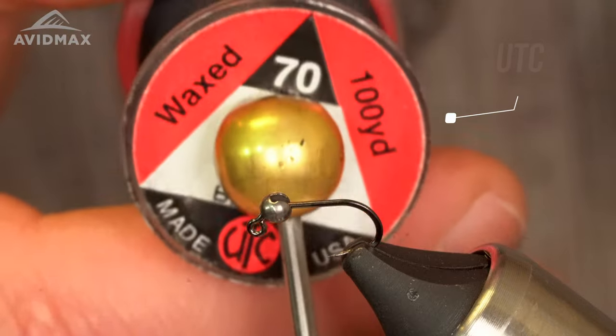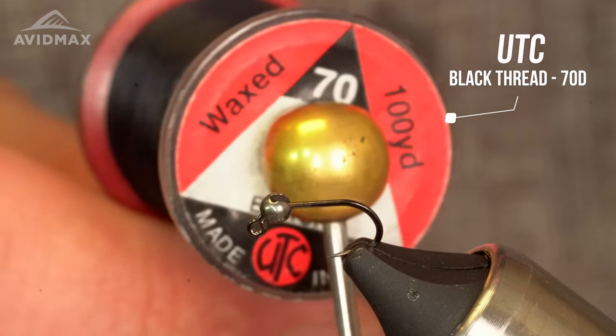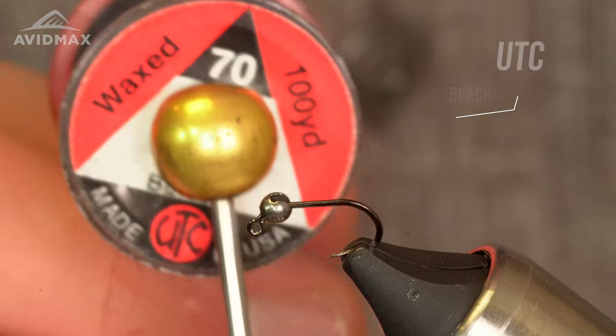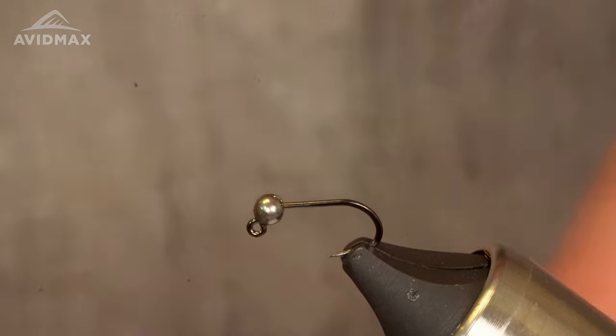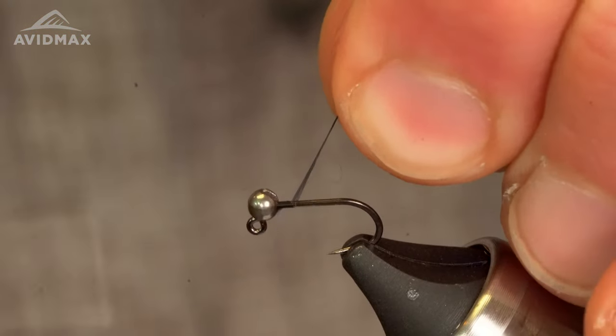Gonna go with UTC 70 black. For a zebra midge you'll definitely also want them in red, fish the red ones in the slow water. Here we go, settle the bead, get her going.